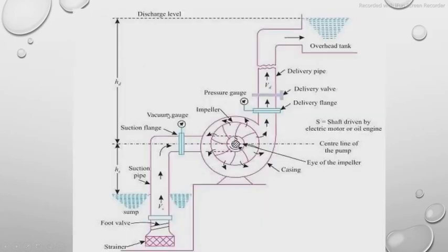Looking at the figure of the centrifugal pump, the shaded part is the shaft. On this shaft the impeller is mounted — this constitutes the rotor part. The outer covering going around it includes the delivery part, the inlet part, and the eye of the impeller. All of this whole covering is known as the casing part.